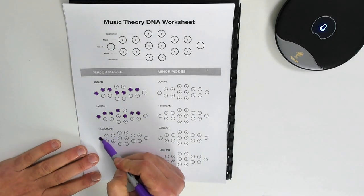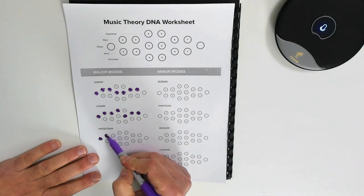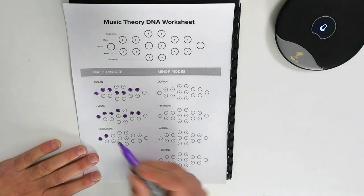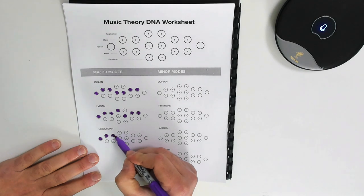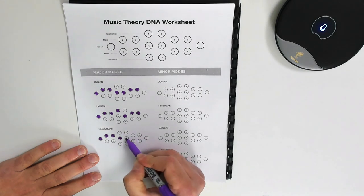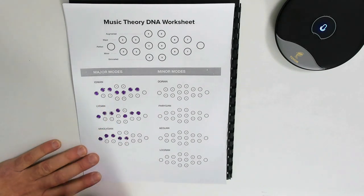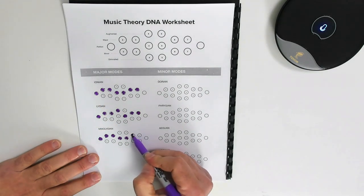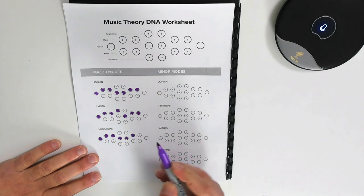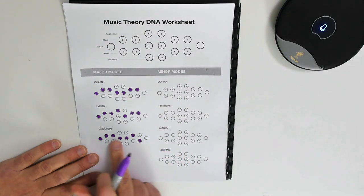Mixolydian is going to be a different path, of course, because if not, then it wouldn't be called Mixolydian. Major third, perfect fourth, perfect fifth. So far, this path here looks exactly like the Ionian, right? But there's going to be a difference here. In the seventh, it's going to be a minor seventh. Okay, so that's the path of the Mixolydian. These three paths here are different from each other, and that's why they have different names.